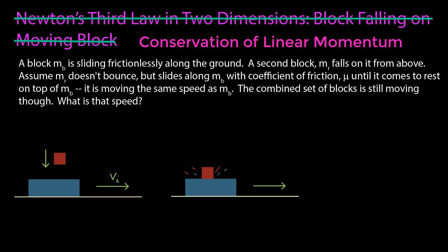Now when it hits, we say it doesn't bounce, but it's sliding with friction along the blue block until it comes to rest relative to the blue block. Now at that time, both are moving with the same speed in the same direction, but it's going to be different than the initial speed that blue had. And the question is, what is that speed?